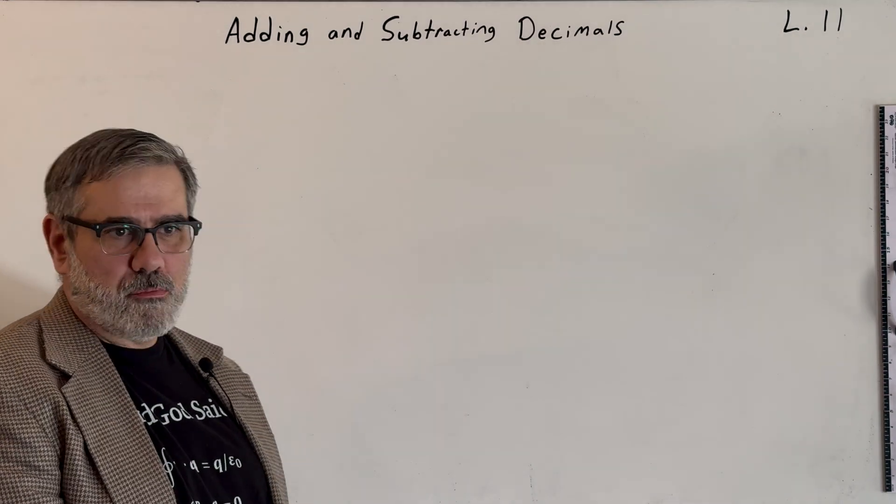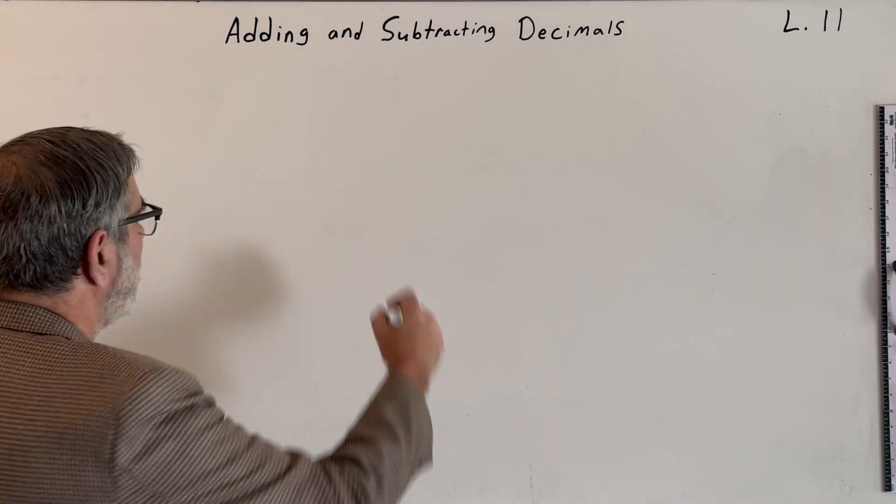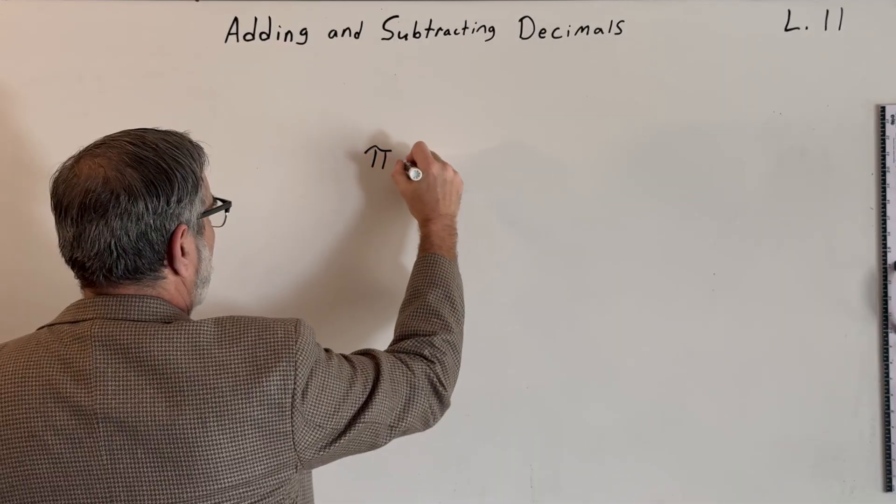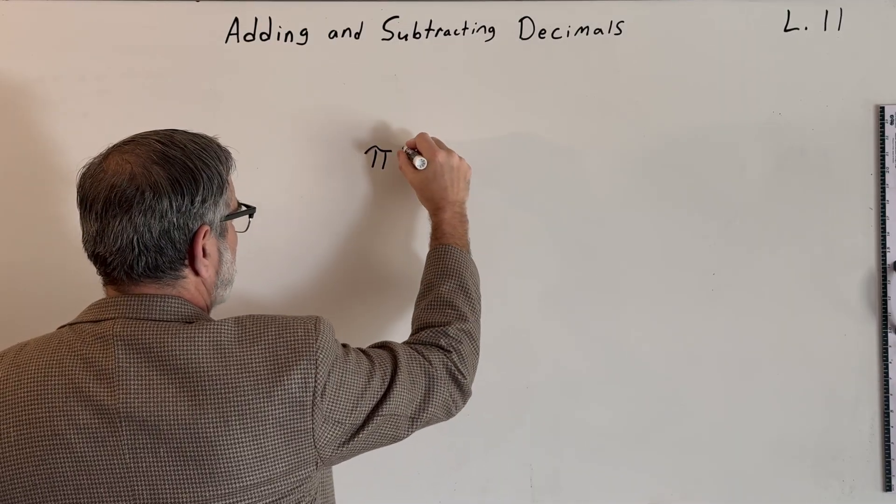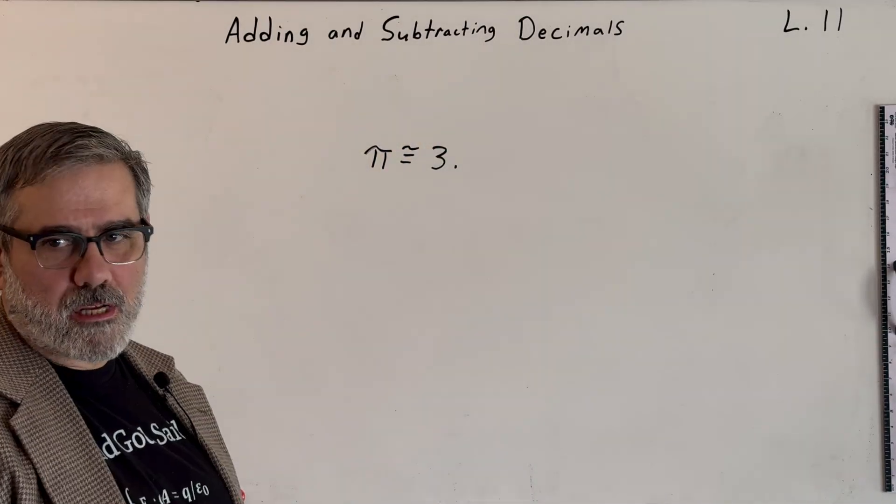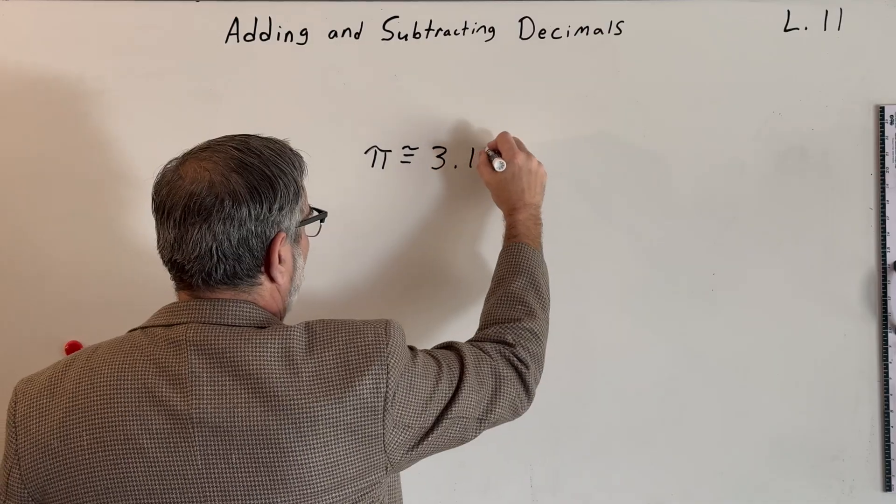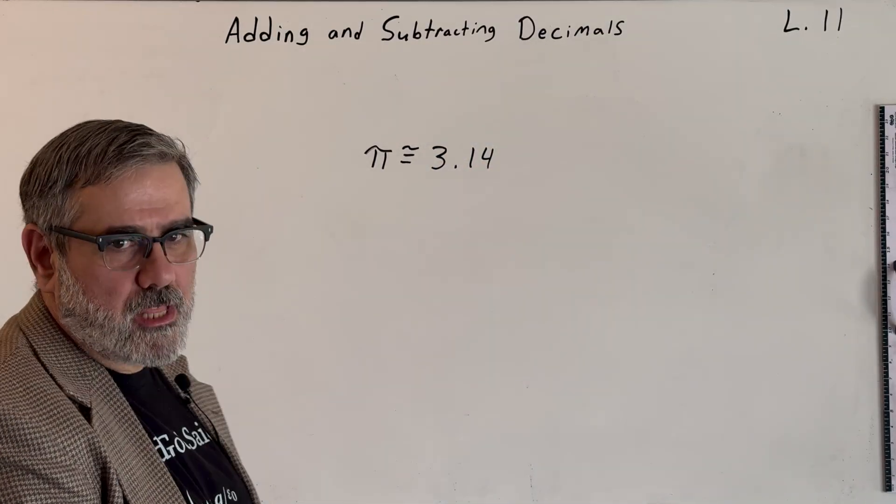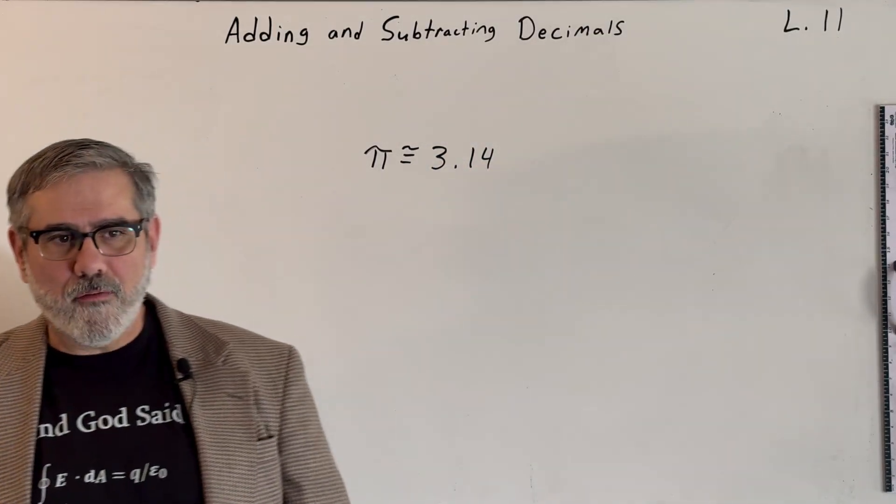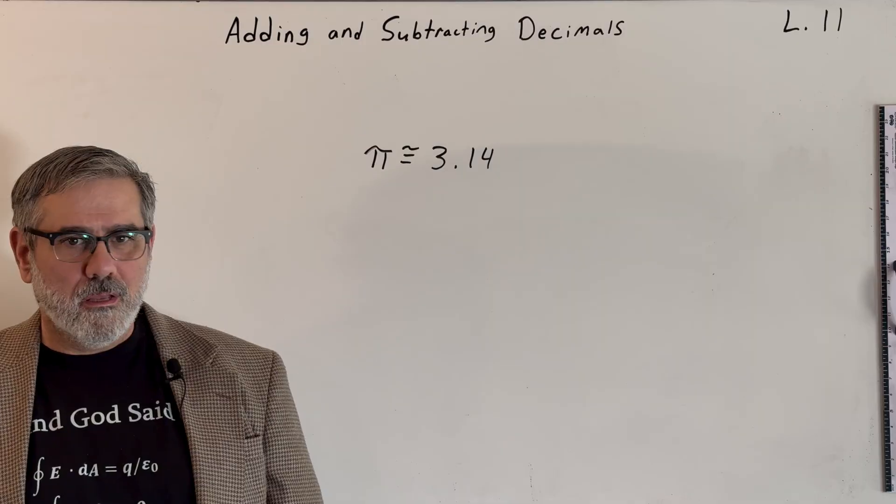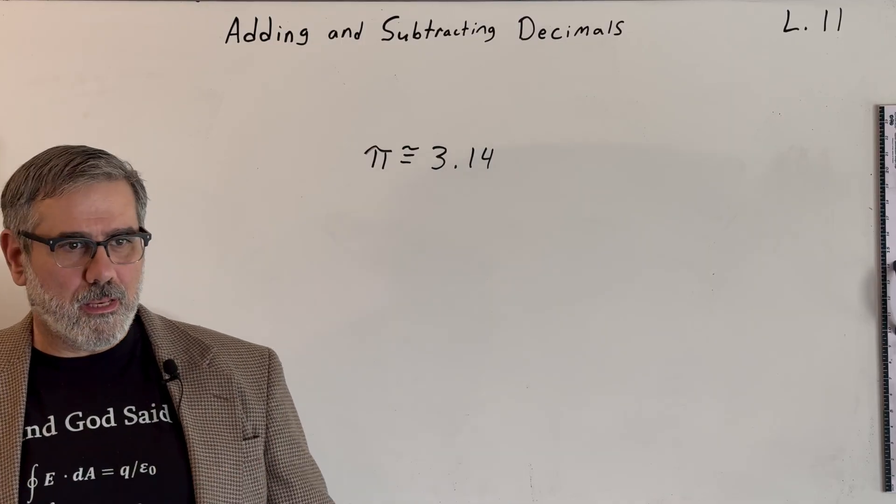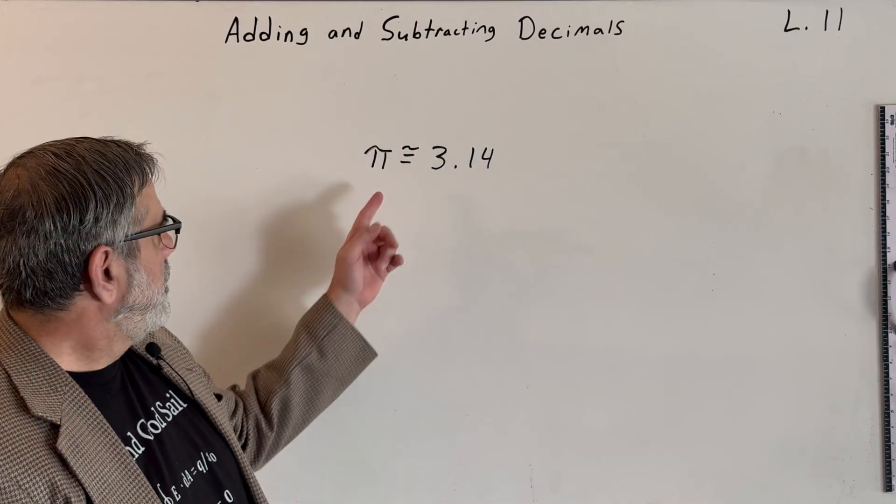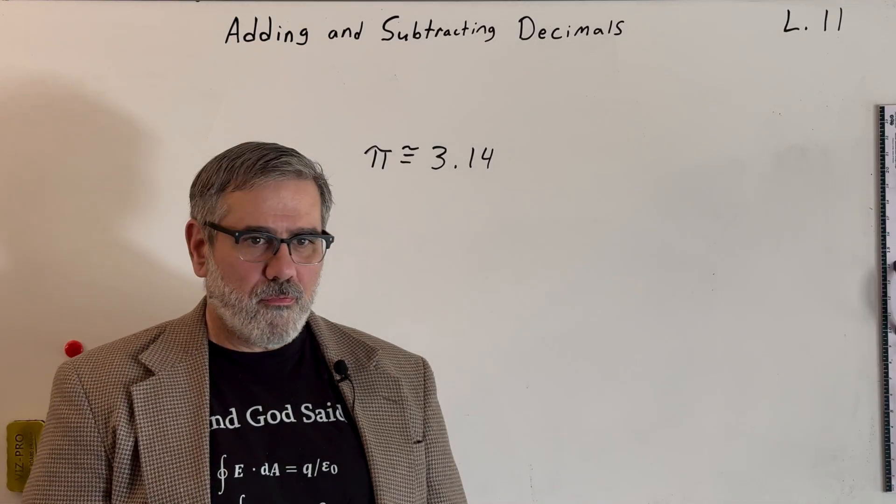Another place you may have seen decimals are in special numbers, like you may have heard of the number pi, which is approximately anyway, so I'll put a little funny equal sign. That kind of means approximately equal to 3.14. And then there's a bunch of digits that keep on going forever, never repeating the same pattern twice. It's a special kind of number called a transcendental number. We're not going to get into what that means, but pi is one of them. E is another one that you may have heard of.